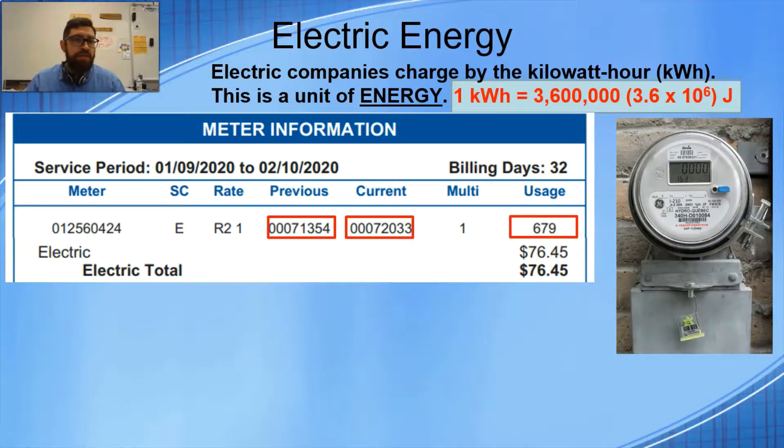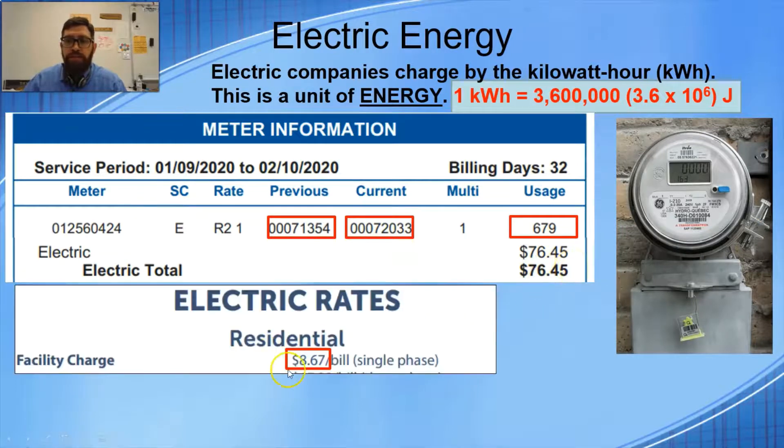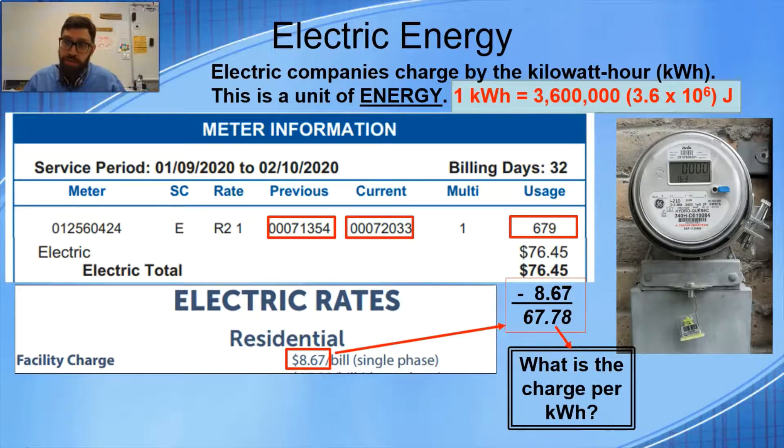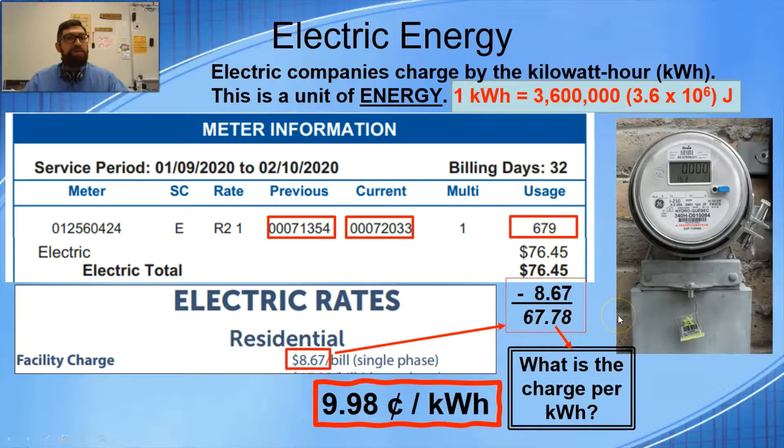You use a lot more energy in the summertime when you're running your air conditioner. But this is approximate - somewhere between 800 to 1,500 kilowatt-hours a month, depending on how big your house is and how much energy you're using. Then you see my charge here. If you look down the rest of my bill, there's an $8.67 charge per bill. That's just a flat fee. So what I did is simply subtracted that fee from my charge, and that gives me 67.78. That's exactly how much money they charged me for the electricity by itself.